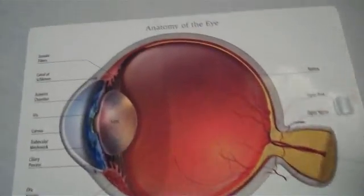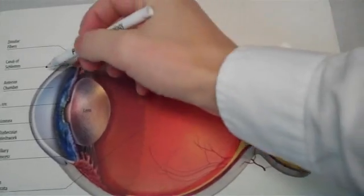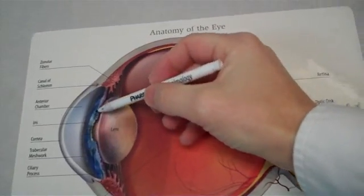So now let's take a look at what happens to that little ball. I've got a little picture here, let me show you. Okay, there's your eye, here's the front of it, here's the color part, the iris.